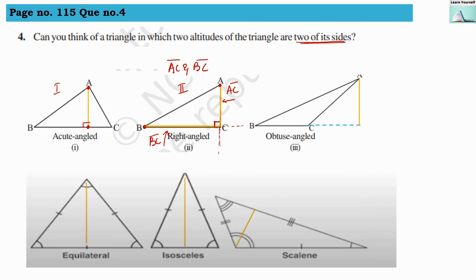For the obtuse angle triangle, altitude AD is outside the triangle. For equilateral, isosceles, and scalene triangles, the altitude lies in the interior region and none of their sides is an altitude. So our answer is the right angle triangle, where the two sides other than the hypotenuse — AC and BC — are the altitudes.